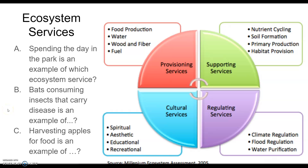Ecosystem services are super important and we'll need to come back to these frequently. These are services that ecosystems provide for us. They give us provisioning services — products such as food or water. They also provide supporting services: how they cycle nutrients, store energy through primary productivity, and how they form soil.